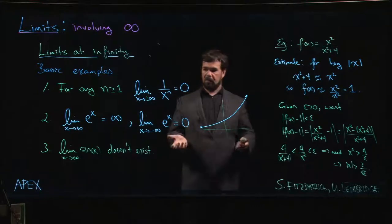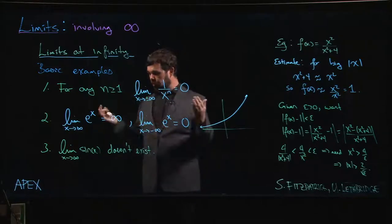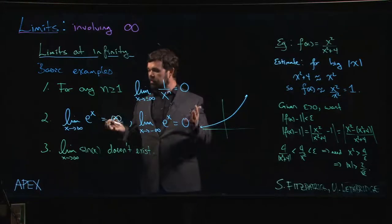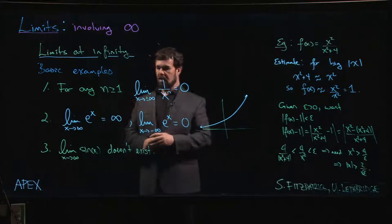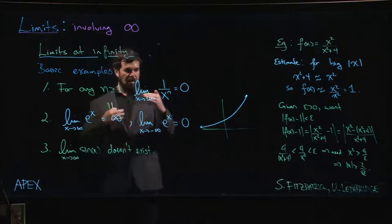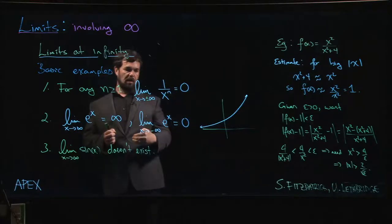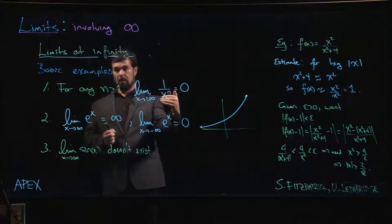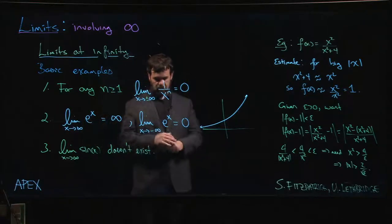Logarithmic functions go to infinity but they go very slowly, slower than any polynomial function. Polynomial functions go to infinity reasonably quickly but not as fast as an exponential function. So typically if you're looking at ratios, if you have an exponential over a polynomial, the exponential is going to go to infinity faster than the polynomial, so overall the whole thing is going to be infinite. The exponential function wins.